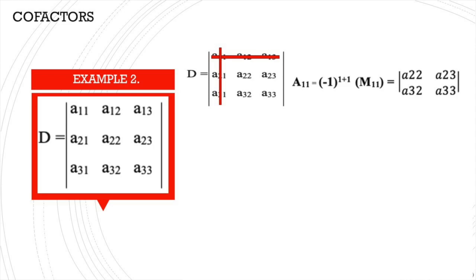So ang cofactor ng a11 ay a22, a23, a32, at a33. Napansin nyo, hindi nagbago yung sign niya kasi ang exponent niya ay even. Magiging negative lamang ito kapag ang exponent niya ay naka-raise sa odd numbers, kasi negative 1 raised to an odd number is still negative 1. Recap lang: makukuha natin ang exponent neto kapag pinag-plus natin ang row number plus the column number.